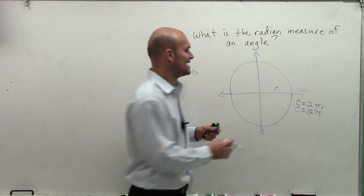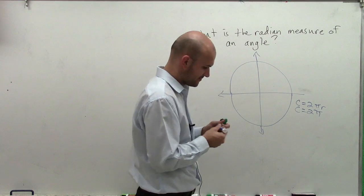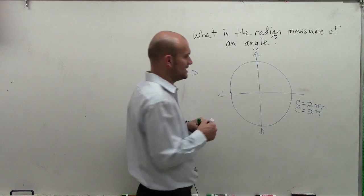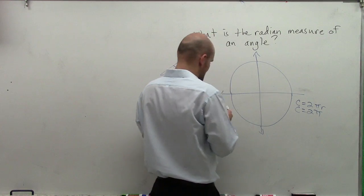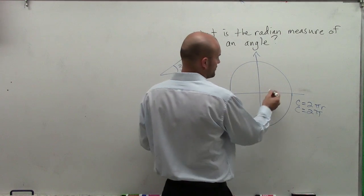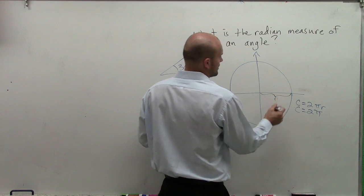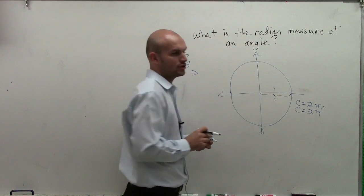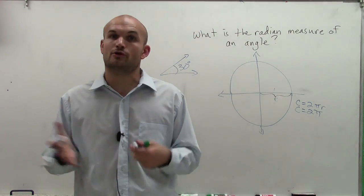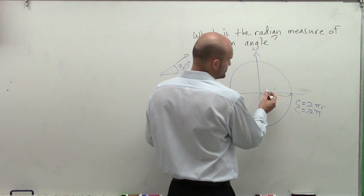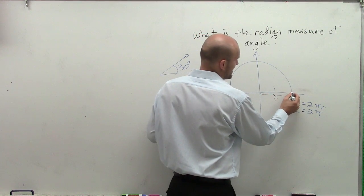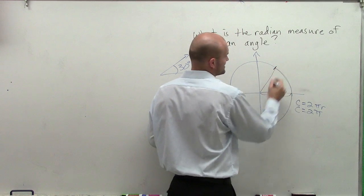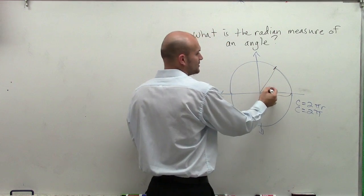So what exactly is a radian? A radian is the distance of our radius — which in this case is 1 — wrapped around our circle. What we do is take this distance and wrap it around the circle, and that creates a central angle theta.